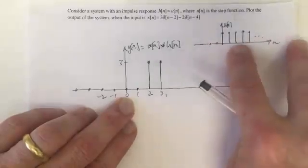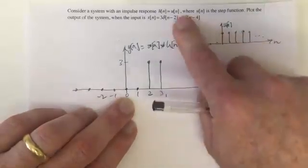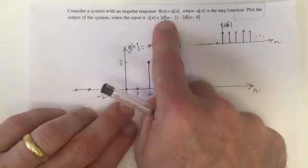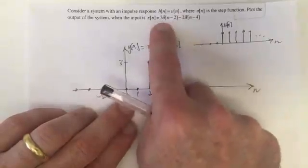So we take this, we shift it to n equals 4, we invert it, multiply by 2, and we're going to be adding it to this one which is multiplied by 3. So we've got 3 and this would carry on if it wasn't for this other impulse.